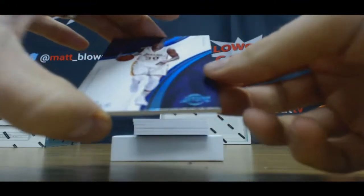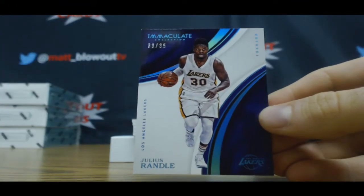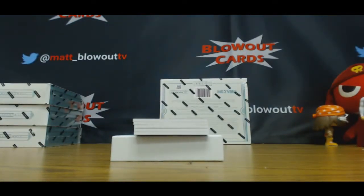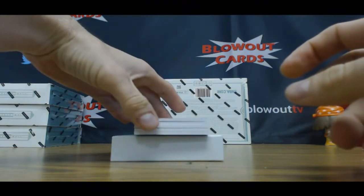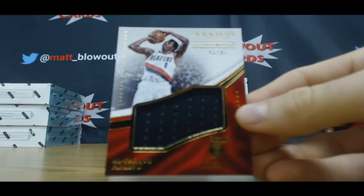I'll start off with Julius Randle, numbered to 35. To 99 Jersey, Al-Farouq Aminu.